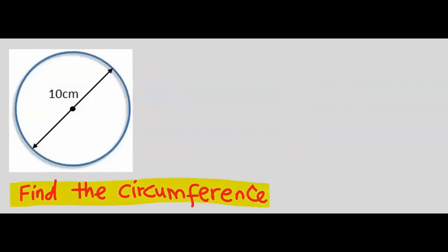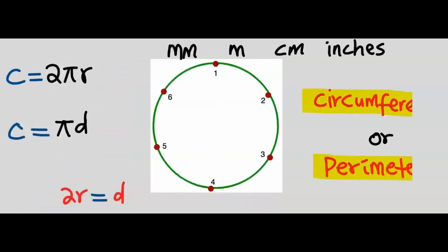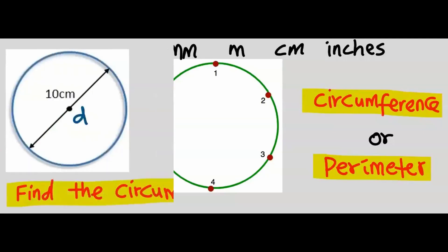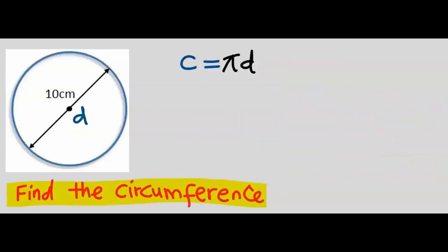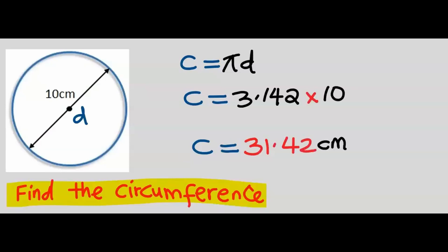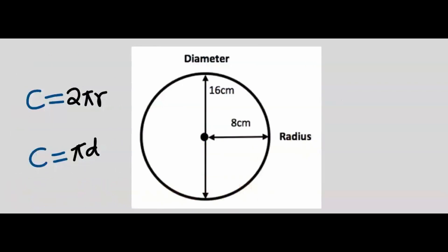Substituting, the circumference is 75.41 centimeters. Next, let's find the circumference of a circle with a given diameter. We use pi multiplied by the diameter, substitute, and the circumference is 31.42 centimeters. To calculate the circumference or perimeter of a circle you need either the radius or the diameter.